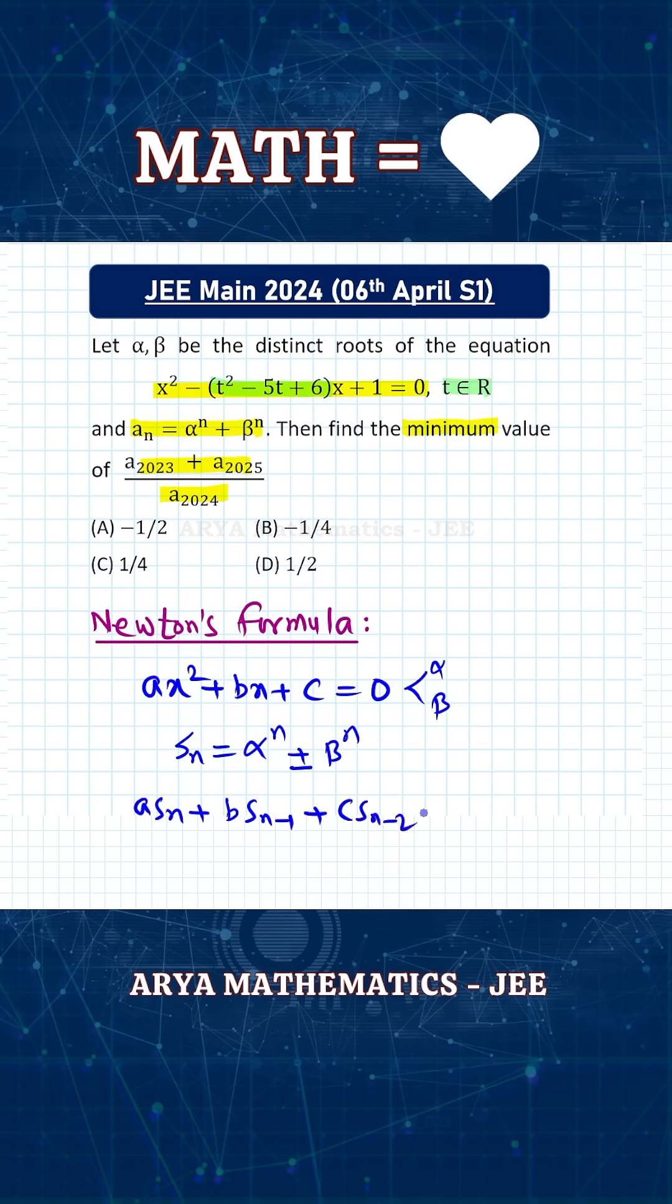this is always 0. This is one very important result that you can remember as standard formula. a into S_n plus b into S_{n-1} plus c into S_{n-2}, this will be 0.